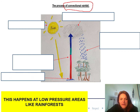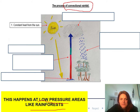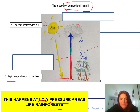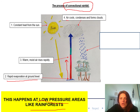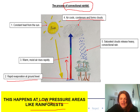We're going to label the diagram to explain how low pressure brings rain. First, there is constant heat from the sun shining down onto the earth's surface all year round — this causes rapid evaporation from the ground and makes all the moisture rise up. Warm, moist air rises rapidly; as it gets higher the air cools, it condenses and forms clouds. Then saturated clouds release heavy convectional rain that falls back to earth. It's this constant cycle of water evaporating, condensing, and raining — that is what we call low pressure.